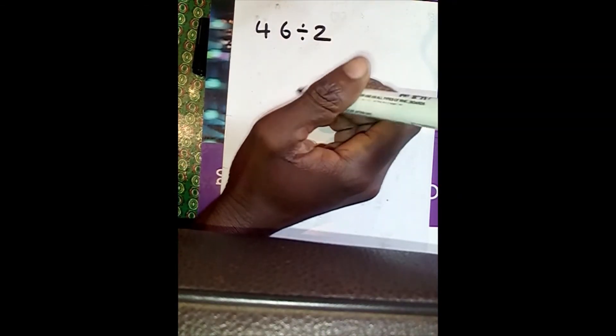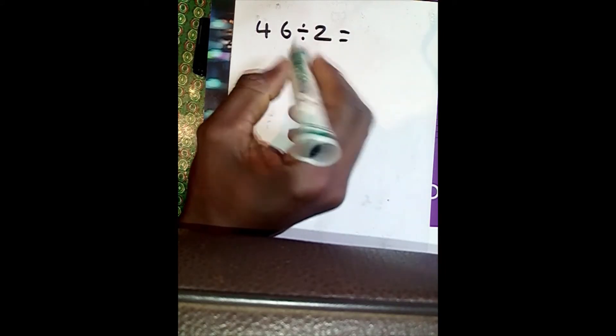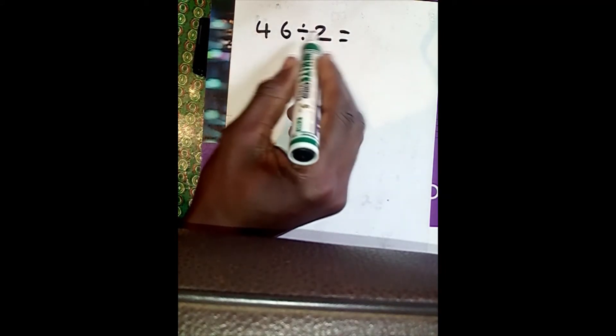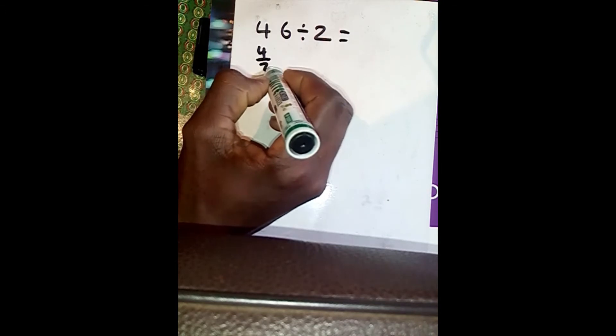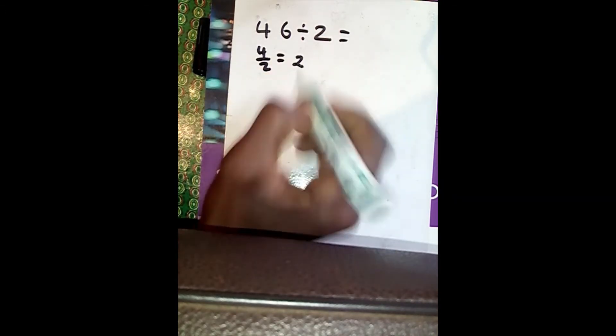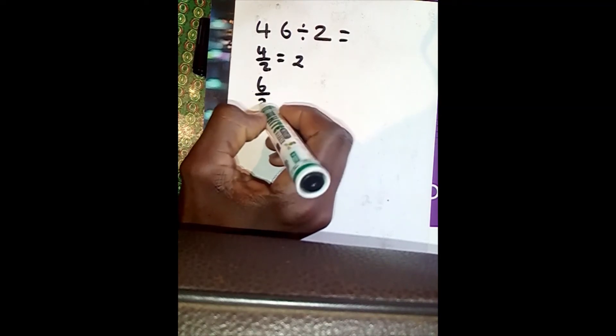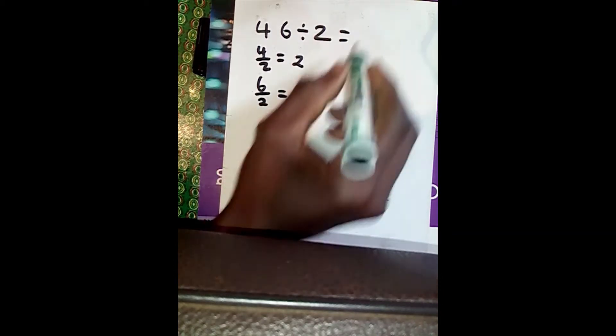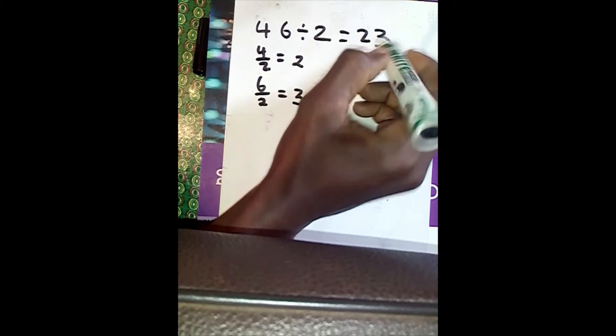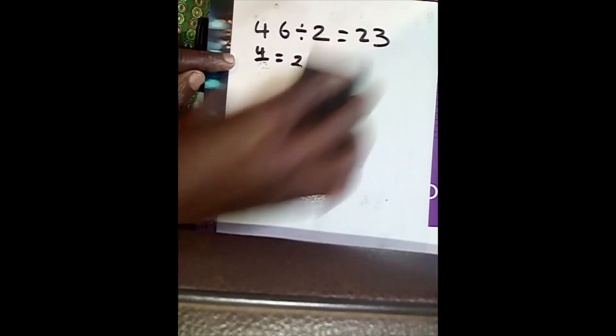Let's go for division. Let's say you are given 46 divide by 2 — how do you do it? You divide each digit by the number given. So 4 divided by 2 equals 2, and then 6 divided by 2 equals 3. That means the answer is 23.